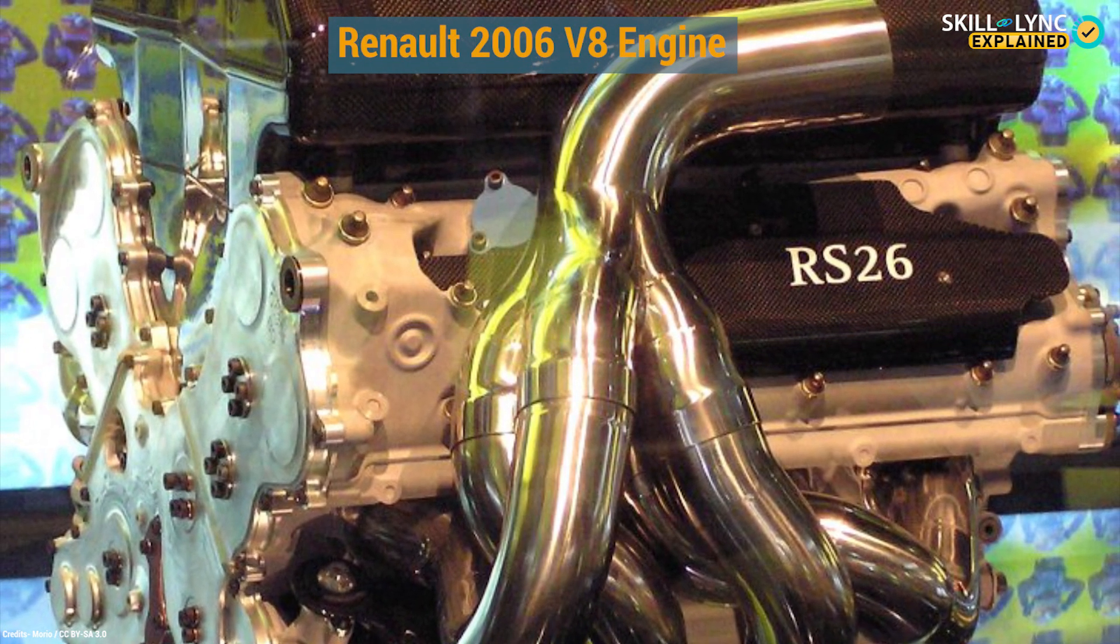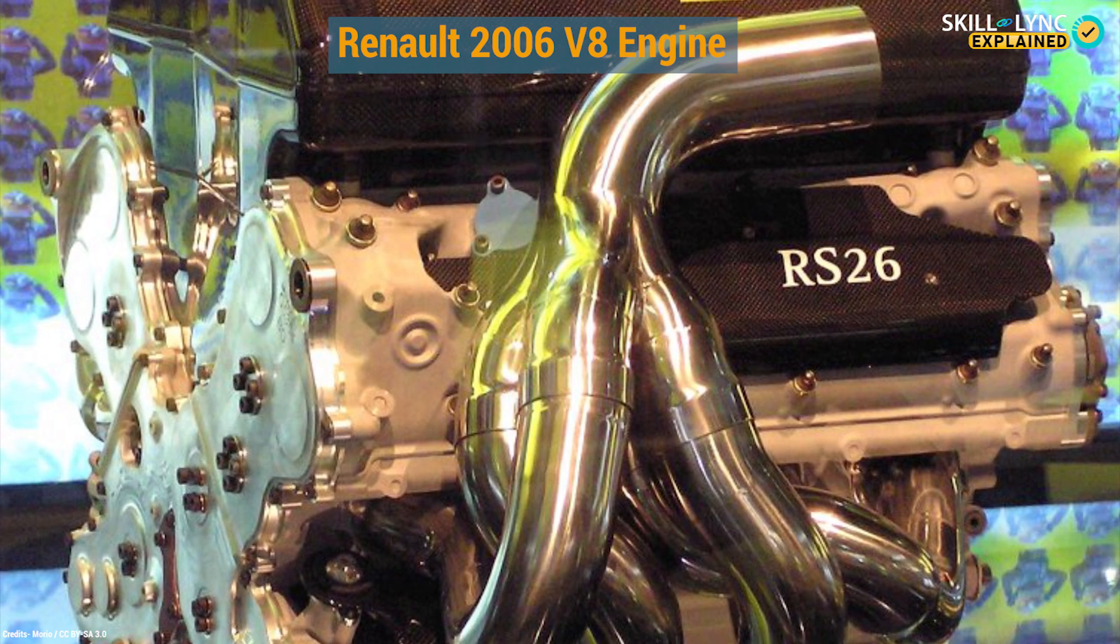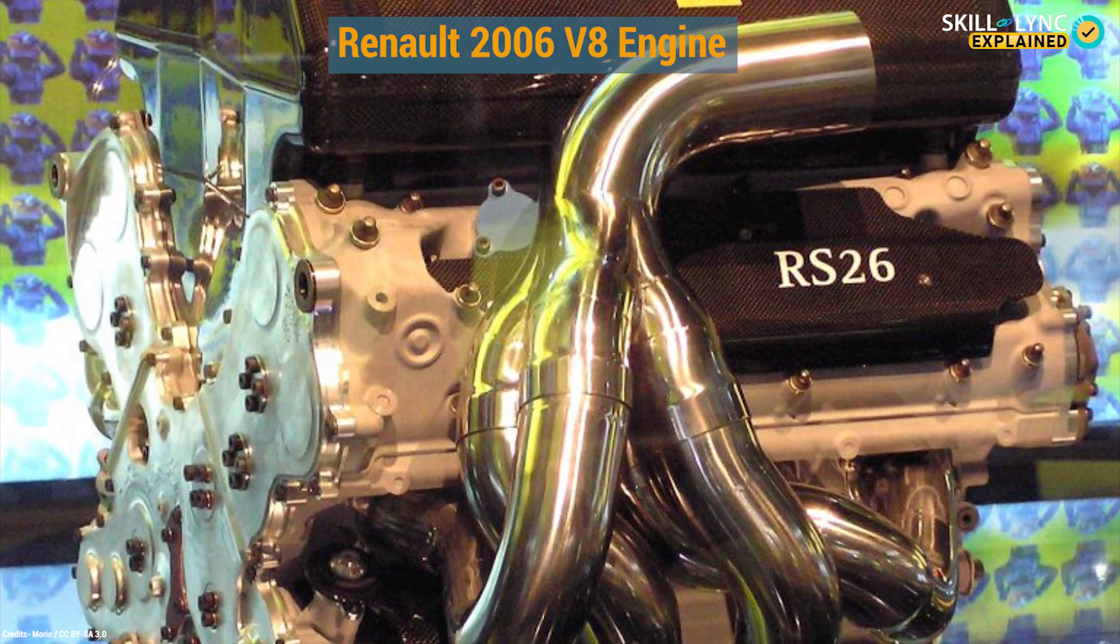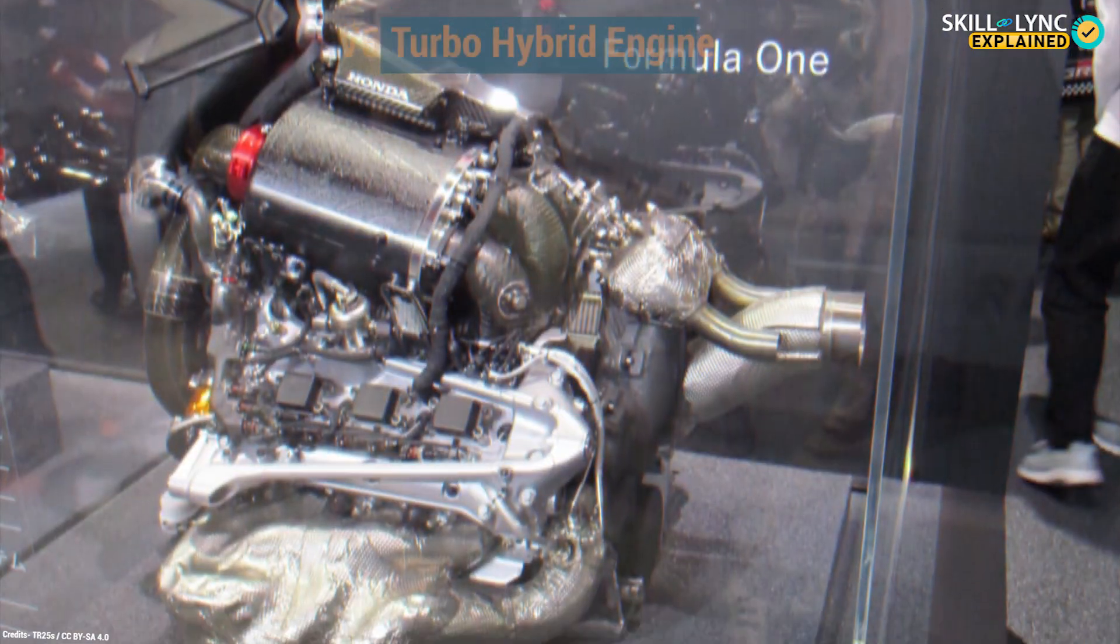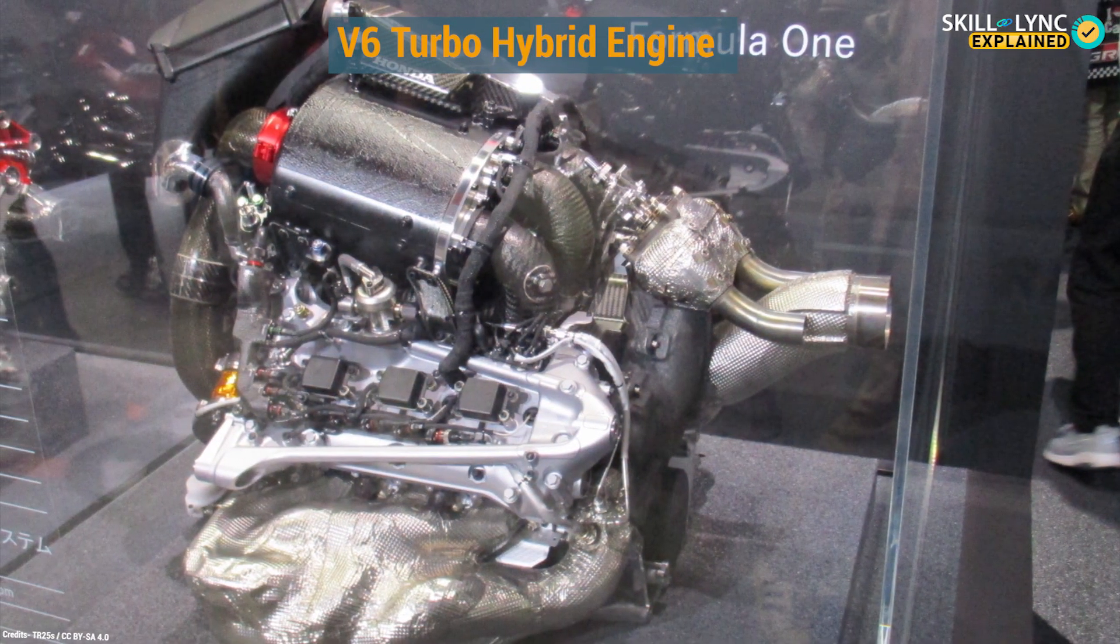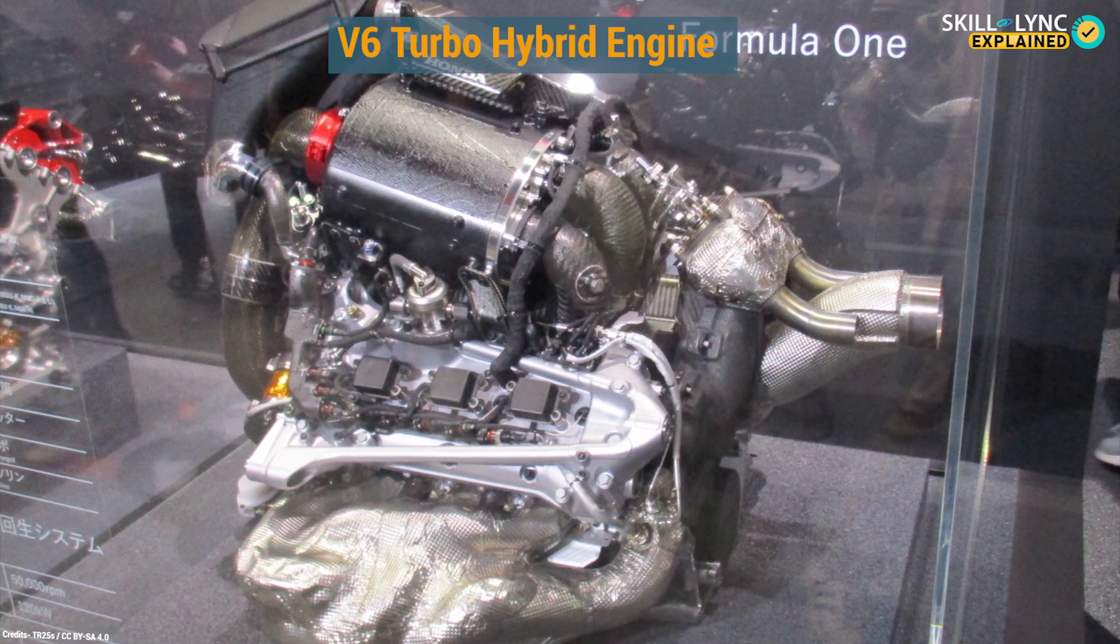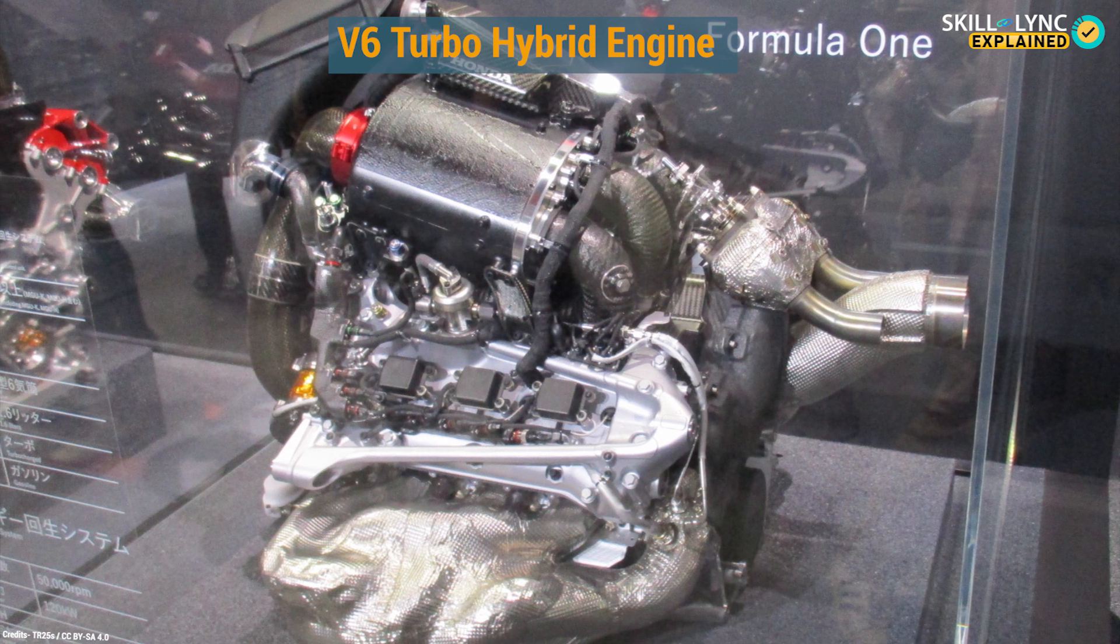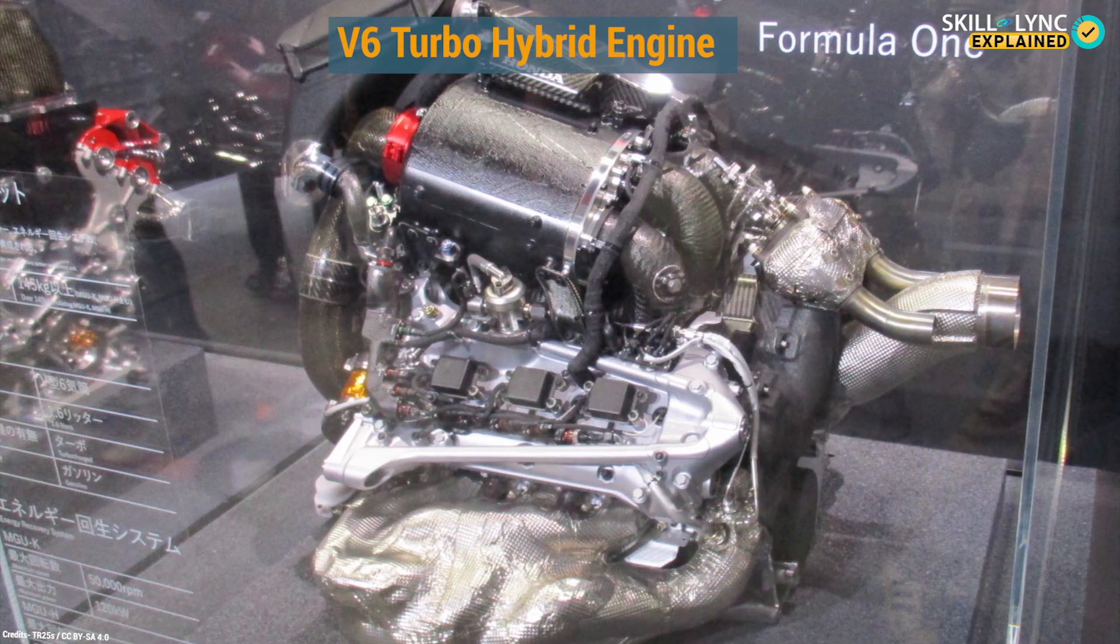During this period, the engines reached a peak thermal efficiency of 29%. In 2014, FIA again changed the regulations for the engines. The engines were expected to be V6 turbo hybrids. The thermal efficiency figure almost immediately jumped to around 40%. Right now, at the time of recording, that figure stands at 50%.